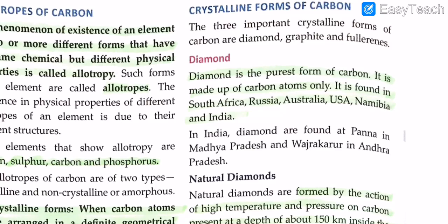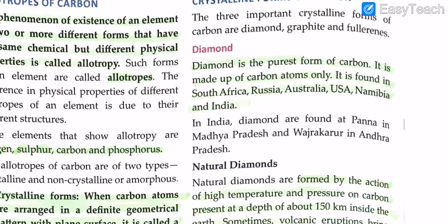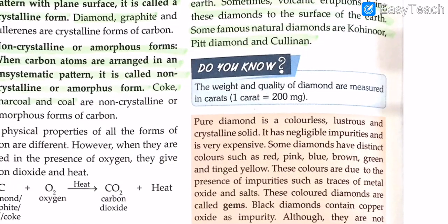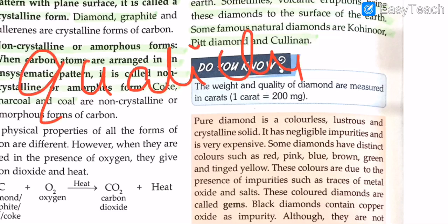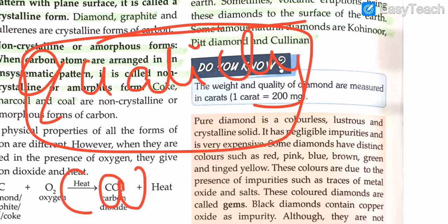The weight and quality of a diamond are measured in carats. One carat equals 200 milligrams. When people buy diamonds, they refer to measurements like 'one carat' or 'two carats' — this is the standard unit for measuring diamond weight and quality.